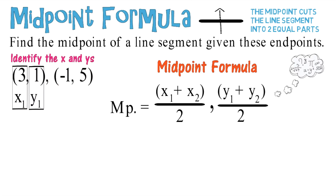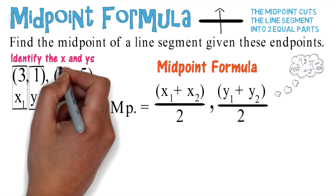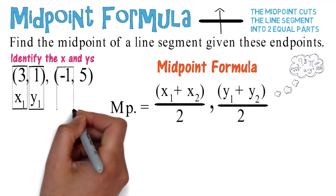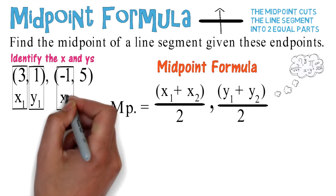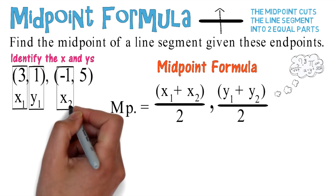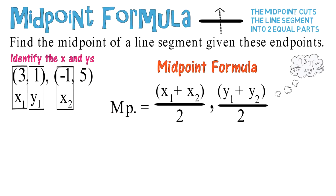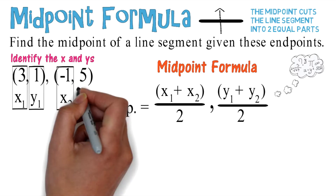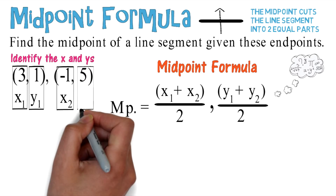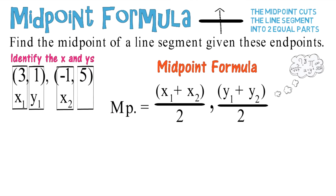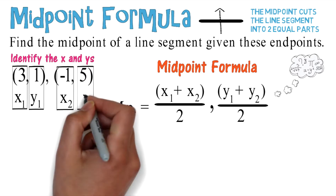And 1 is going to be your y1. Negative one — take a guess — is going to be your x2. And 5 is going to be your y2.